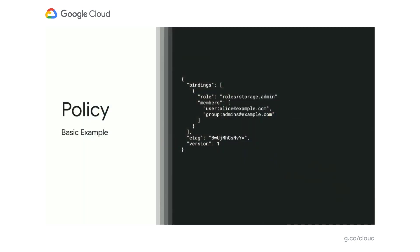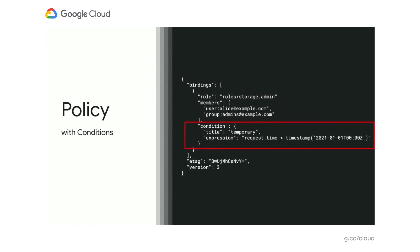Moving on. IAM has added some new features since it first launched. Recently, one such feature required us to version the schema of the policy content itself. Let's take a look at a basic policy example. We introduced a feature called IAM conditions, which allows you to configure when bindings should apply or not. Here you can see a condition was added to the binding that states its effect is only valid for requests made before January 1st of 2021. You might have also noticed the presence of this condition bumped the version field in the policy from 1 to 3.